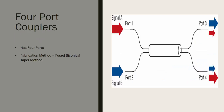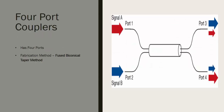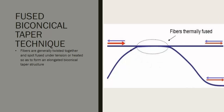For four-port couplers, the total number of input and output ports is four. The fabrication method used is the fused biconical taper method. In this technique, the fibers are twisted and fused together under very high tension and temperature, and elongated to normal fiber dimensions. This elongated portion serves as the coupling region. As seen in the figure, one of the legs can be cut off to make it a three-port coupler from a four-port coupler.